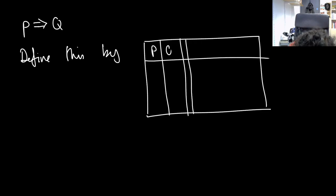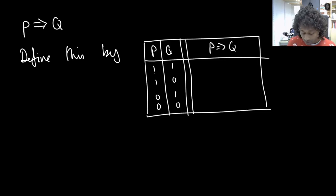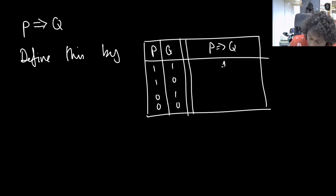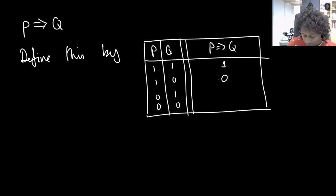So we have P and Q with values 1, 1, 0, 0 and 1, 0, 1, 0. What does it mean for P to cause Q? We see that P has happened and Q has happened, so we want to say that P has caused Q there. We see that P is true and Q is false, and certainly in that instance we don't want that to be true.